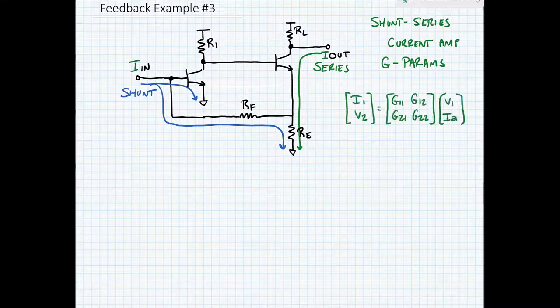Just a reminder: the matrix equation for our G parameters is given here. [I1, V2] is equal to [G11, G12; G21, G22] times [V1, I2].